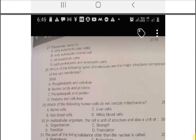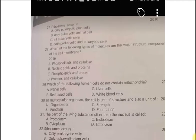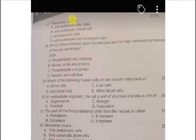The next question is ribosomes occur in A. Only eukaryotic plant cell, B. Only eukaryotic animal cell, C. All eukaryotic cells, D. Both prokaryotic and eukaryotic cells. So, the correct option is the option D. Both prokaryotic and eukaryotic cells. Next question.